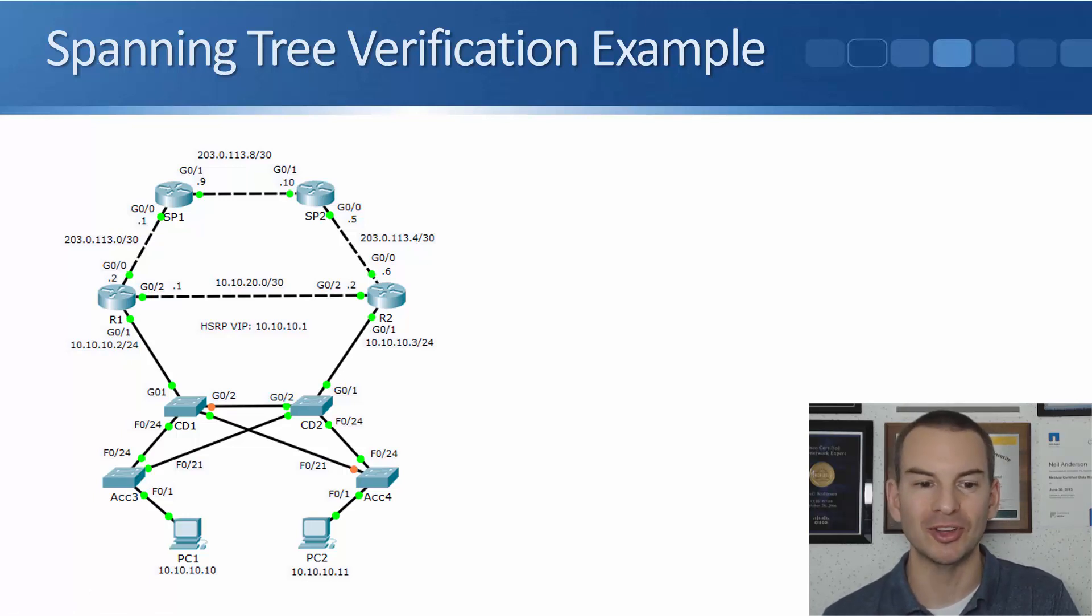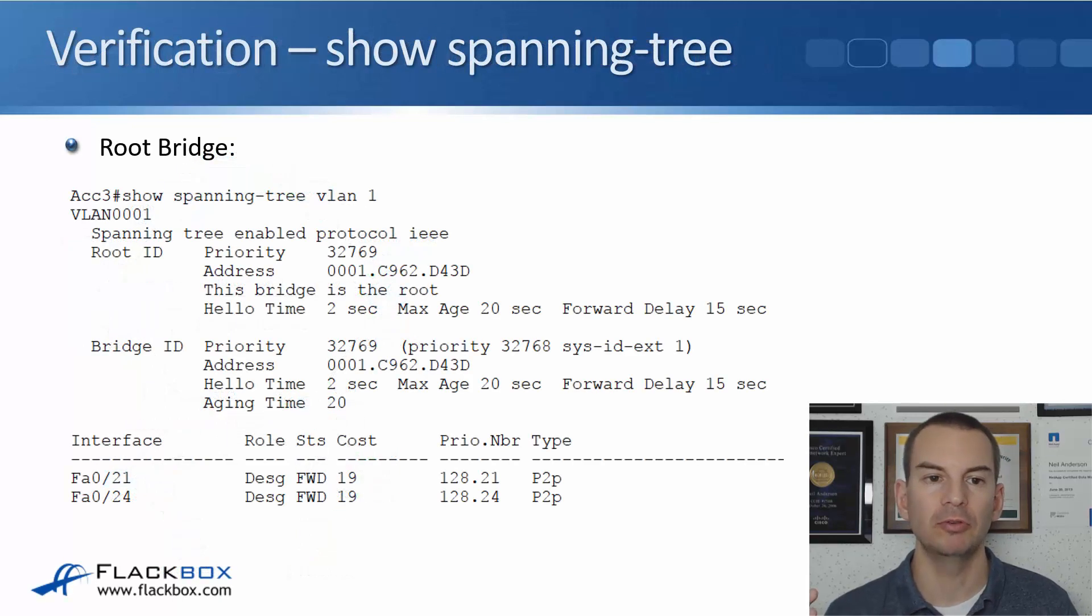But obviously in the real world, you're not going to have a diagram which shows you exactly how spanning tree is configured. So how do we figure out how the spanning tree is laid out in a production network? That's what we're going to cover here using the same example topology. So really the Swiss Army knife command for checking your spanning tree configuration is show spanning tree. You already know that the default spanning tree version on a Cisco switch is PVST+, which runs a separate spanning tree instance for every VLAN. So you also need to specify the VLAN as well.